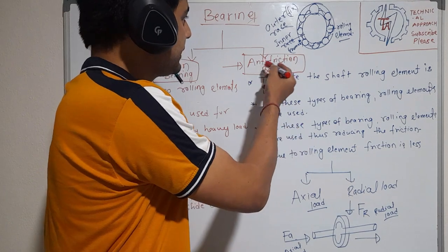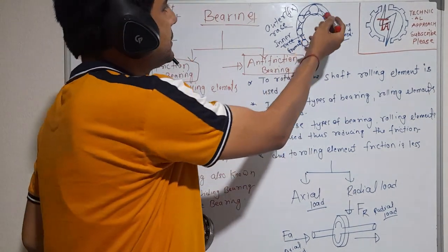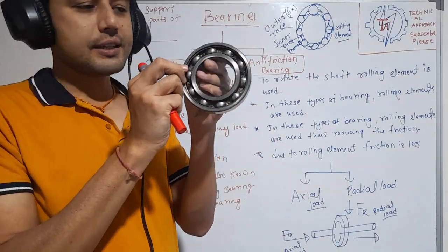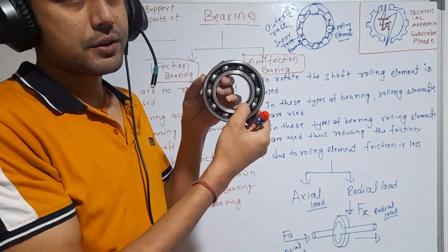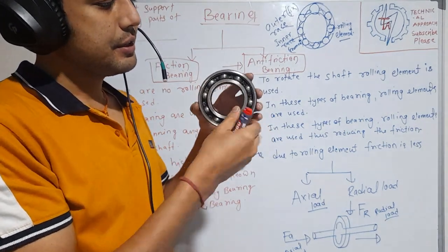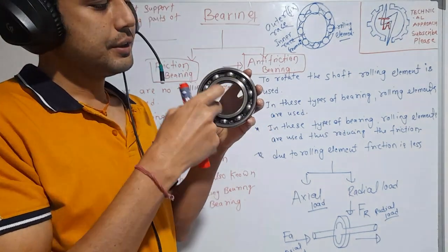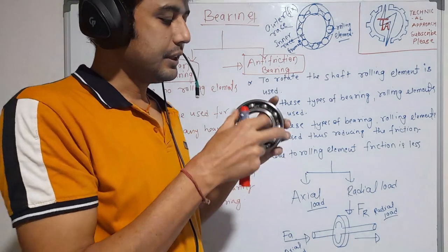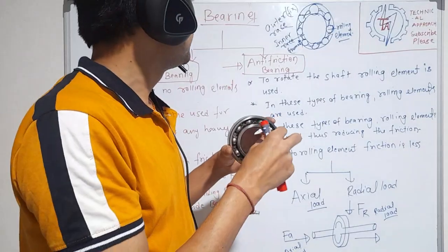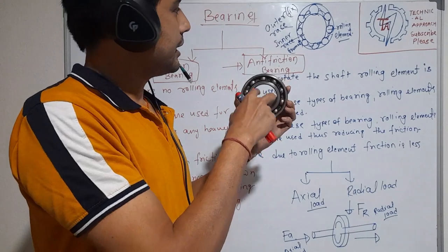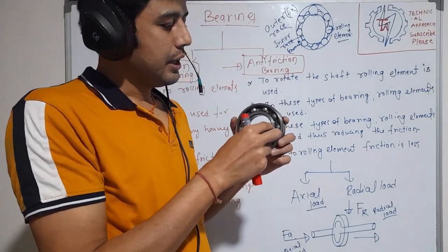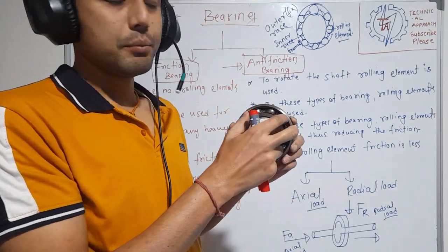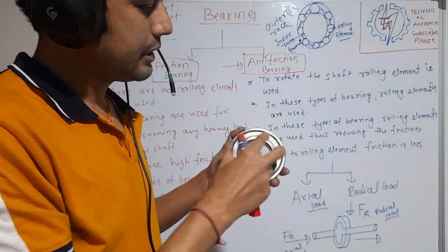For this anti-friction bearing, I define the parts here. This is called the outer race, and this part is called the inner race, which has the borehole. The shaft will be fixed inside this diameter — this is the ID, this is the OD, this is the inner race, and inside is the cage with balls. The outer side is sealed.